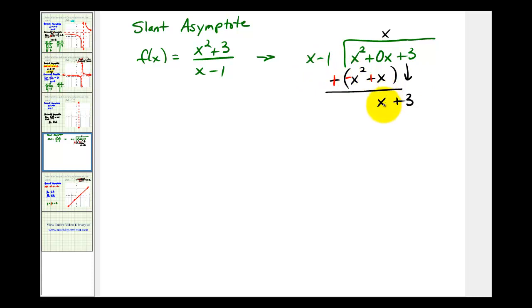What times x would give us x? That'll be positive one. Now we'll multiply one times x minus one. That's going to be x minus one. But again we're subtracting this quantity, so instead we'll add the opposites. We change this to addition, change that to a negative, change that to a plus sign, and the remainder is four.